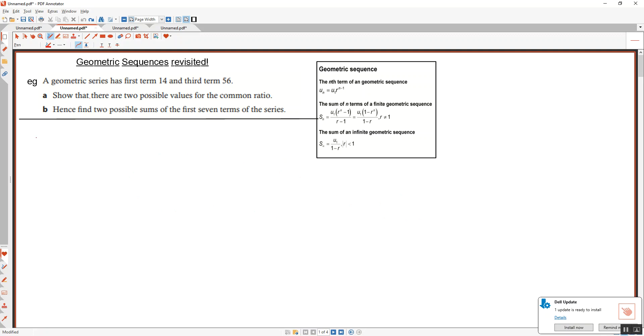Show that there are two possible values for the common ratio. Can you remind me what a geometric sequence is? Yeah, it goes up by a common ratio. Each sequence is being multiplied by the same amount as the previous term.